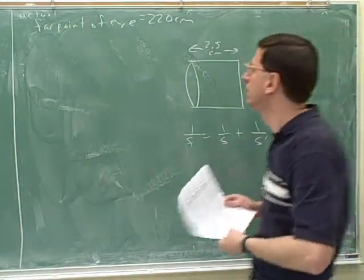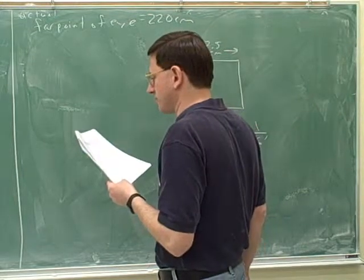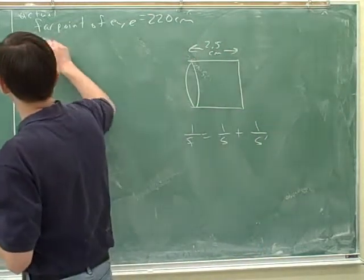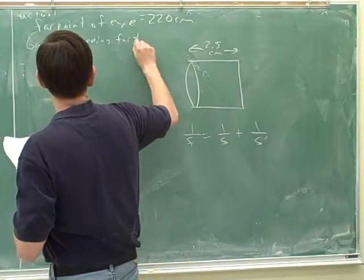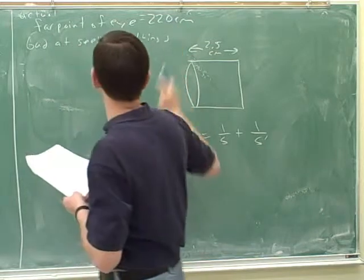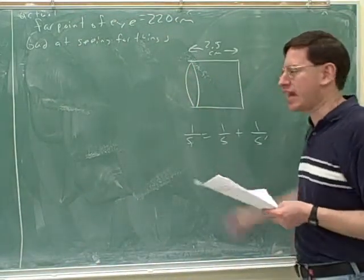So is this person bad at seeing far things or bad at seeing near things? Bad at seeing far things. In fact, they can only see things that are about two meters away. This person is blind as a bat. All right, so we want to fix that.